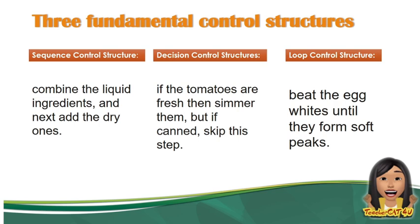Let's say you are cooking rice. If there is too much water, then the rice will become lugaw (porridge). But if there is not too much water, it will cook as regular rice. Unlike when there's too much water, which results in lugaw. So in the decision control structure, the keyword used is 'if.'